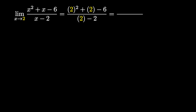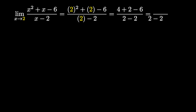When we simplify the top, 2 squared is 4, leaving us with 4 plus 2 minus 6. 4 plus 2 is 6, and 6 minus 6 is 0. The bottom is 2 minus 2, which is also 0.